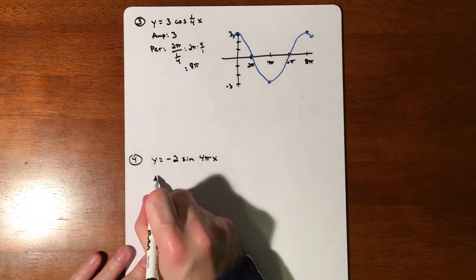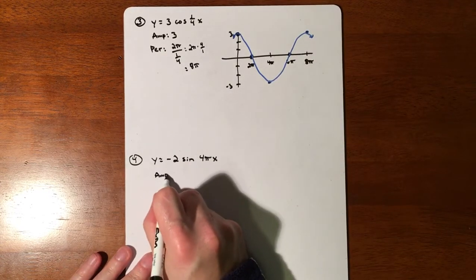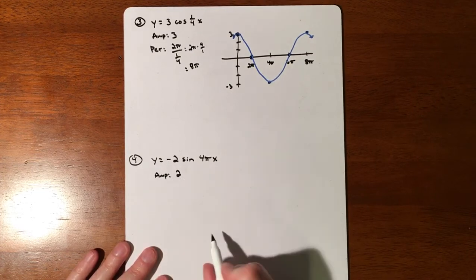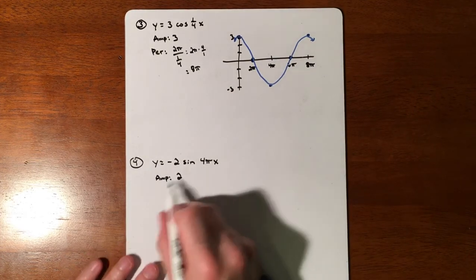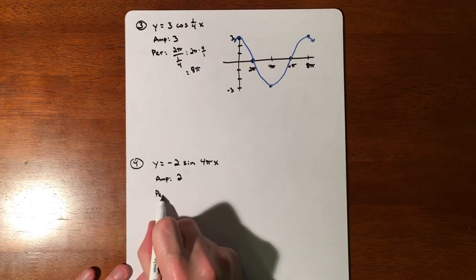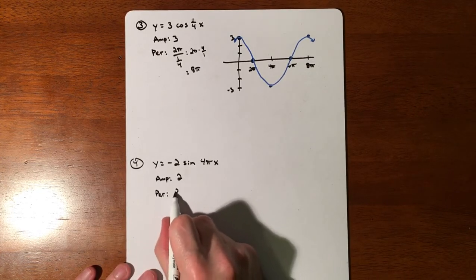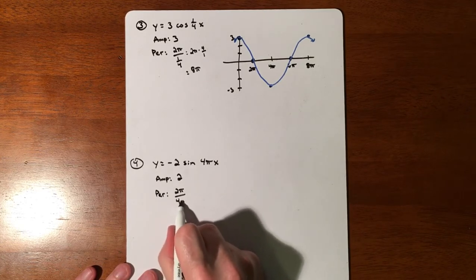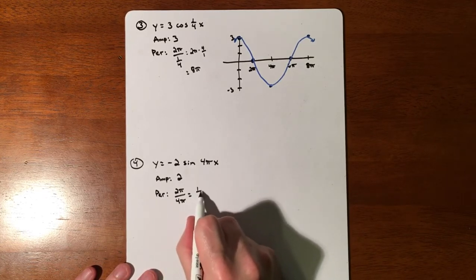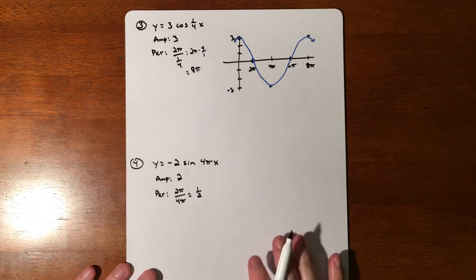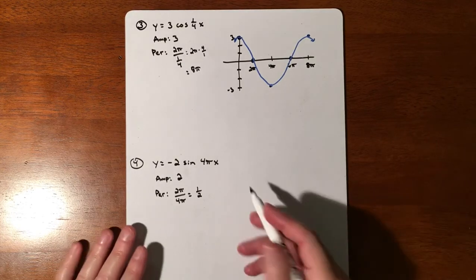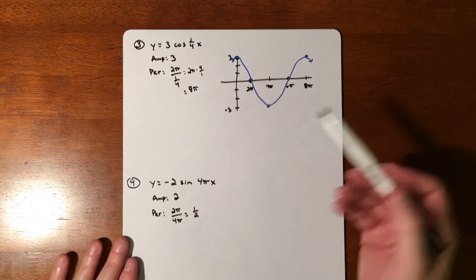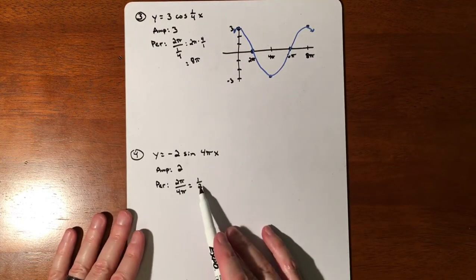Alright, last one: amplitude. Our amplitude is 2. The negative is going to vertically reflect our graph. This one's going to be a little bit different, where our period is going to be 2π divided by 4π, which just makes 1 half. So it's a weird period. Normally, everything is in radians. What happened? Well, the radian got multiplied through.